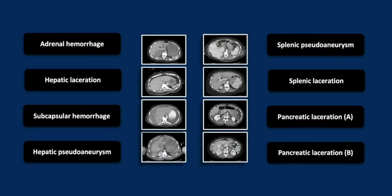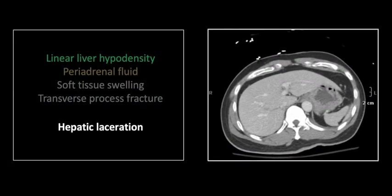Our next case is a hepatic laceration. This is a subtle, linear, fine hypodensity extending from one vascular structure to another here within the right liver lobe. I caution you to keep an eye out for these. By extending between normal structures like this, these lacerations have a tendency to mimic the appearance of a fissure that looks for all the world as though it should, in fact, be there. Note also the lack of perihepatic fluid, so your eye would not necessarily be called to this abnormality.